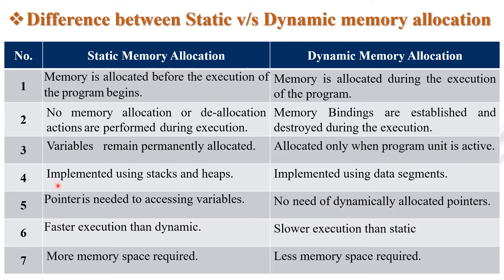Static memory is implemented using stack and heap, while dynamic memory is implemented using data segments. In static memory allocation, a pointer is needed for accessing a variable, but there is no need for dynamically allocated pointers in dynamic memory allocation. Static memory is faster because values are already declared, while dynamic memory allocation has slower execution. Static memory requires more memory space, while dynamic memory allocation requires less memory space because memory is taken and destroyed as needed rather than stored permanently.